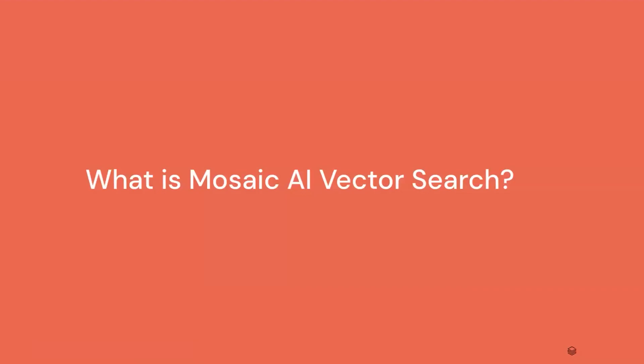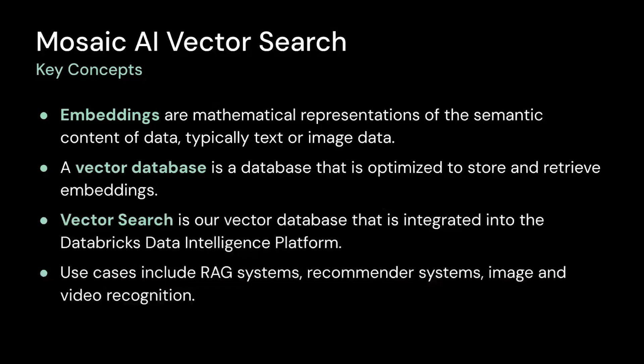First, let's talk about what is Mosaic AI Vector Search. We'll go over the key concepts here. The first one is embeddings. Embeddings are mathematical representations of the semantic content of data, typically text or image data. Embeddings are generated by LLMs and are a key component of many generative applications that depend on finding documents or images that are similar to each other.